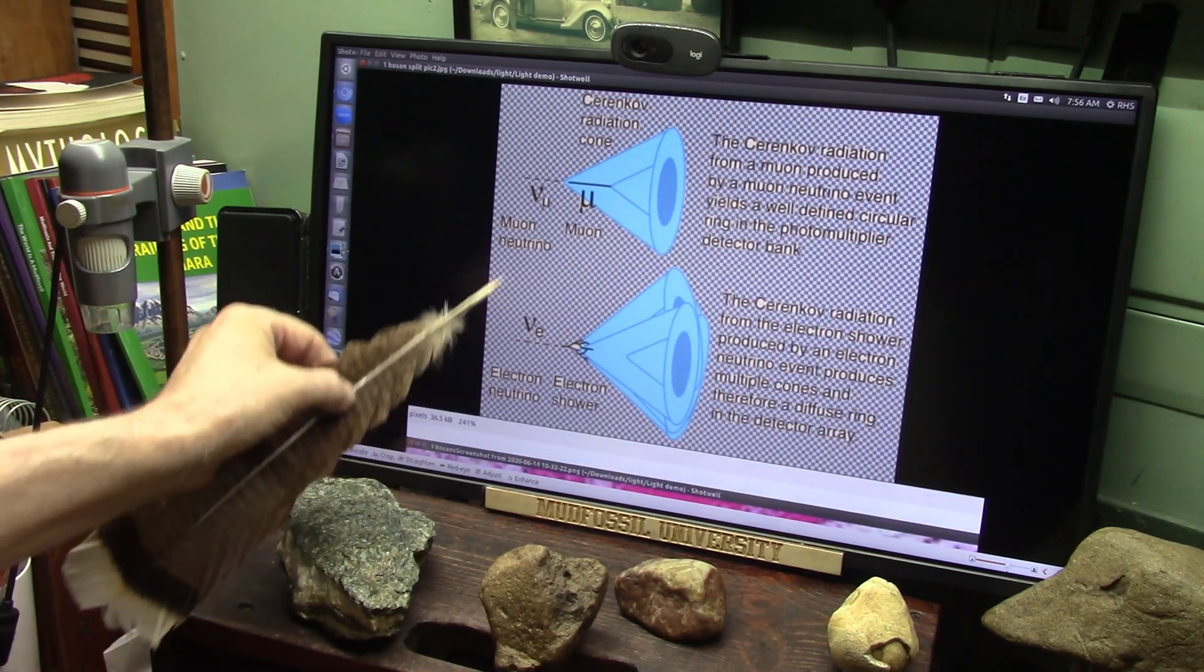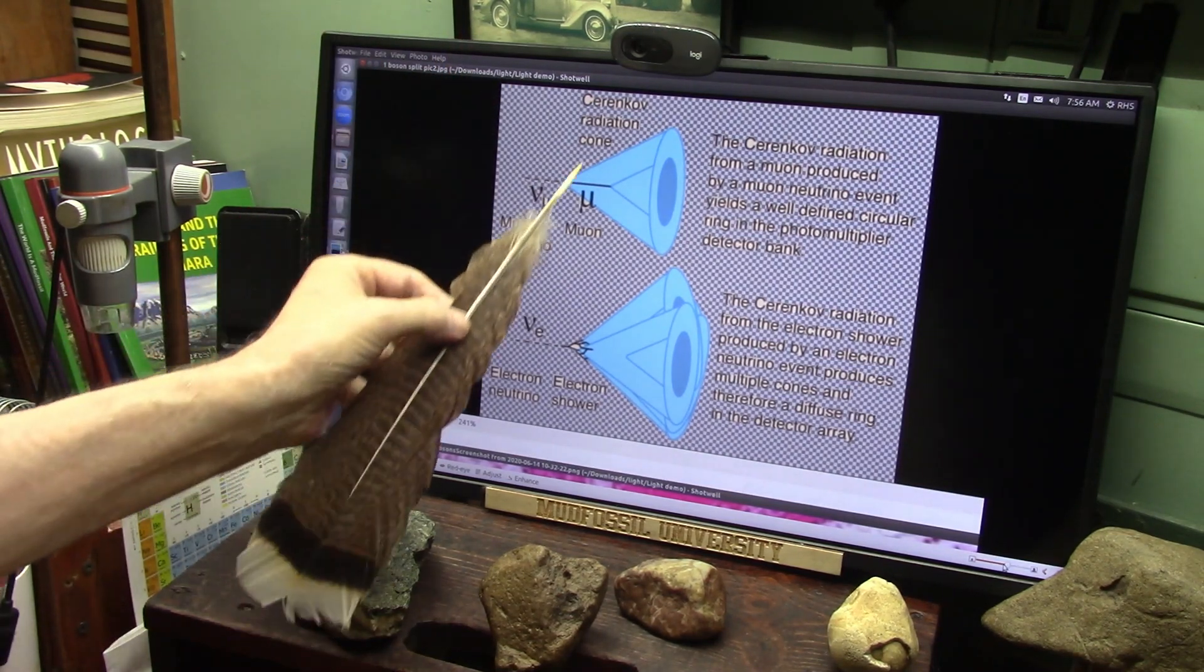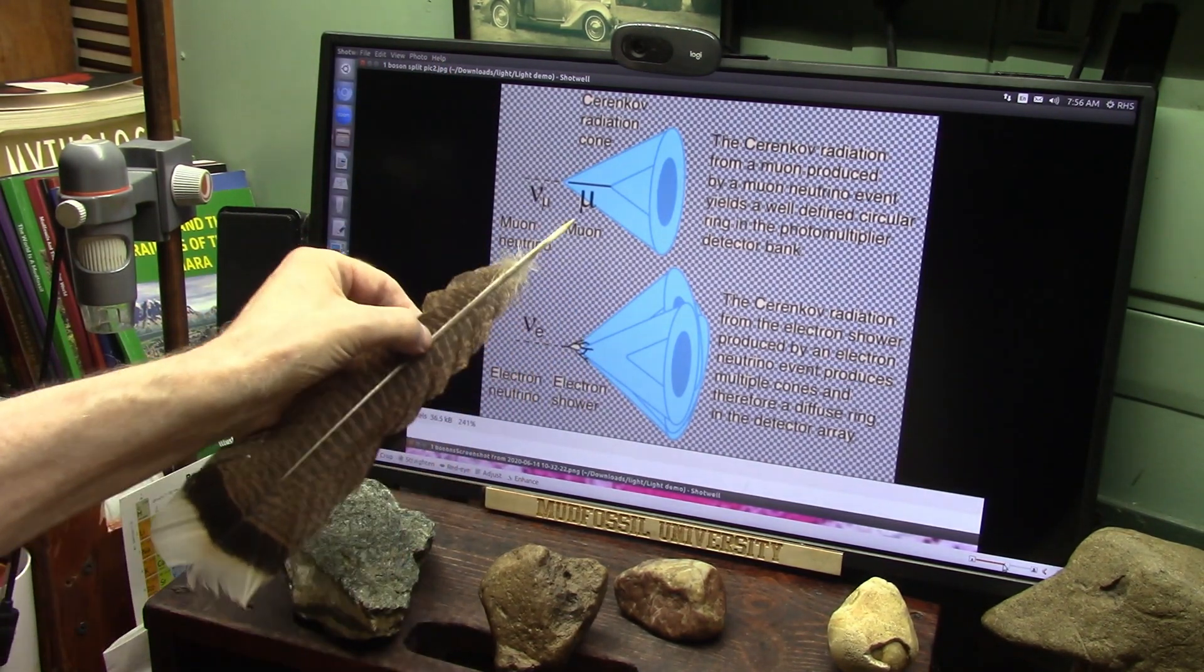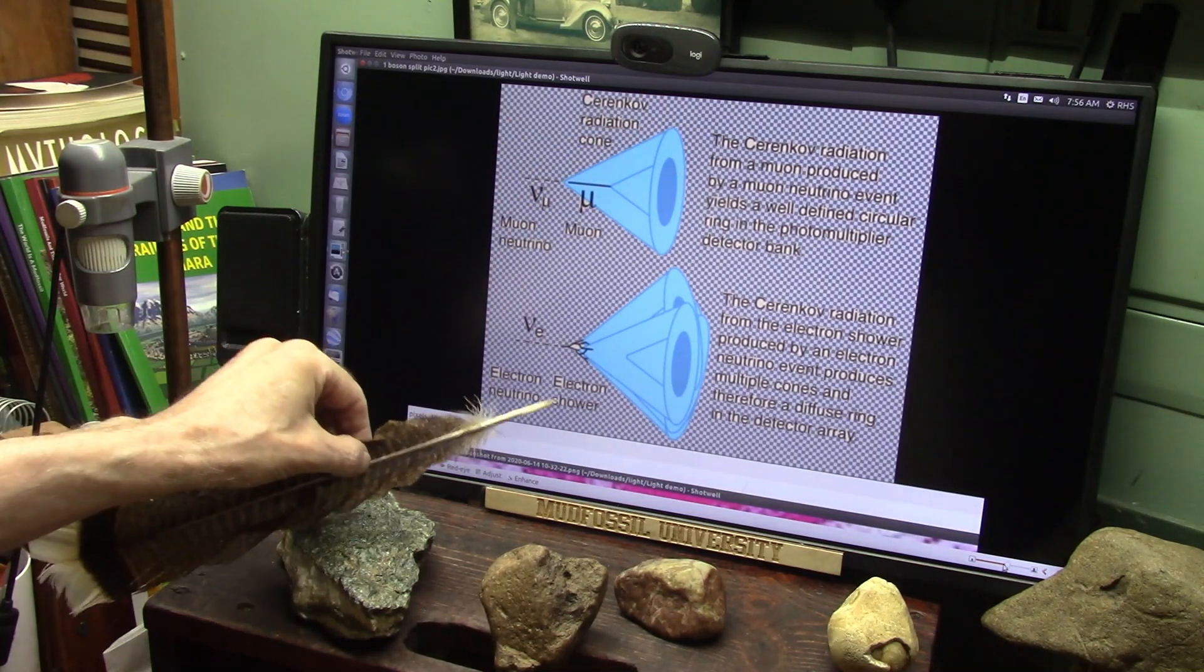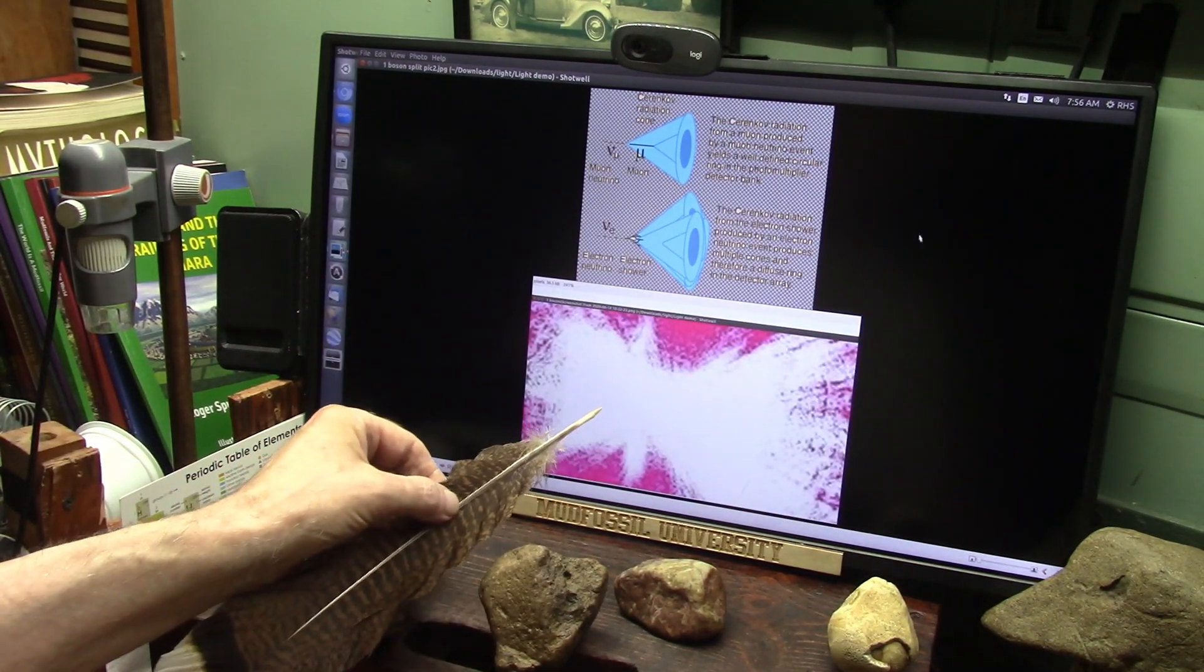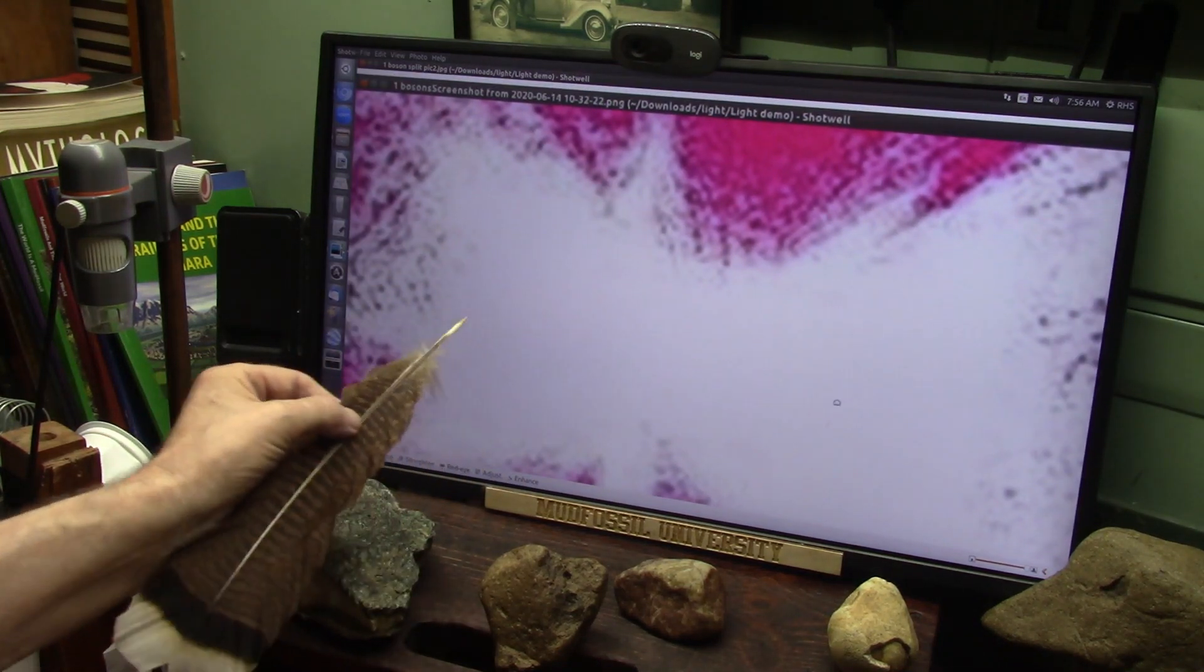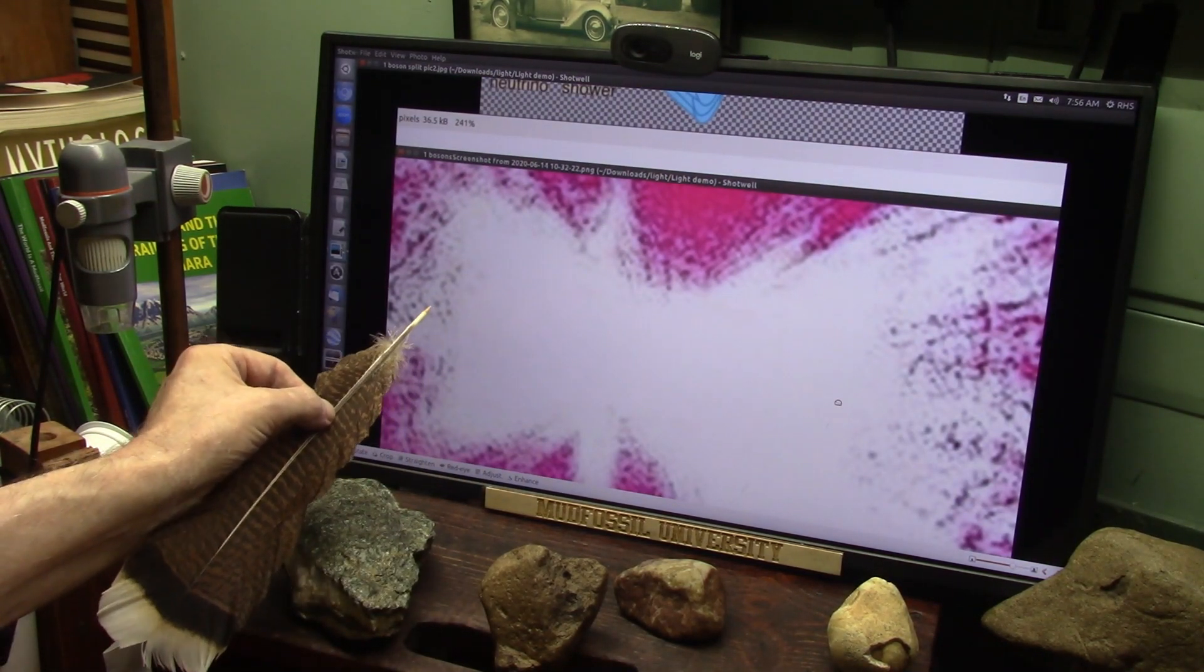They say a muon and electron neutrino together at high energy, which I showed you accelerated, comes in and hits heavy water. The muon goes all by itself, and the electron turns into a shower. Precisely what you see here. Exactly. There's no question. This is it.